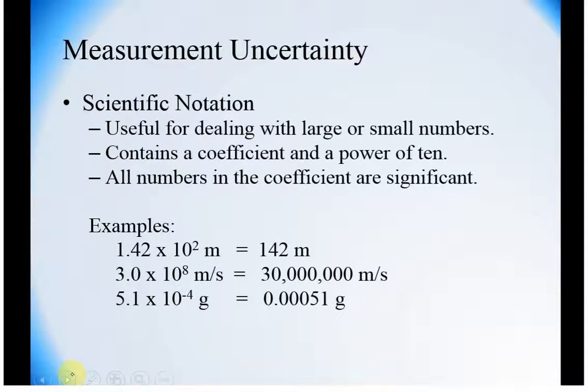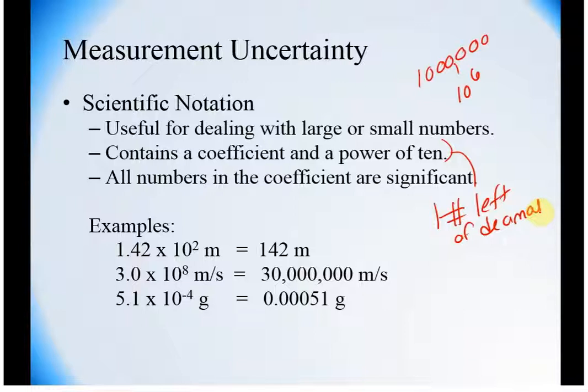Another way to account for measurement uncertainty is to use scientific notation. It's also really helpful when we're dealing with large or small numbers because it allows us to, instead of writing say a million, we could just say 10 to the sixth. Generally, scientific notation is going to contain a coefficient. This coefficient has one number to the left of a decimal, and then you have a power of 10.